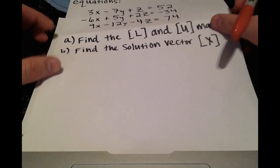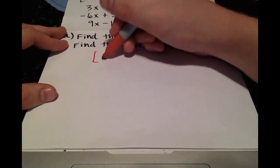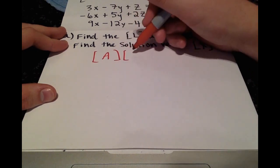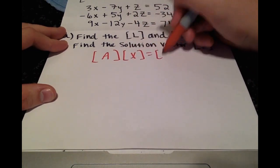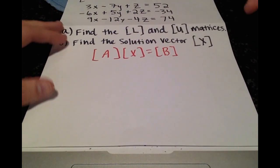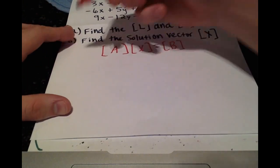So the first step, of course, is going to be to set this up into the form AX equals B. So we're going to transform our system of equations into matrix form.